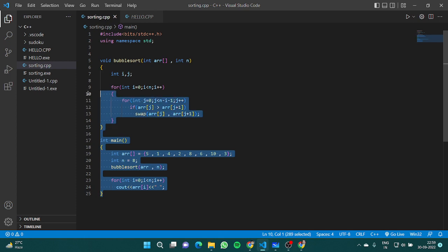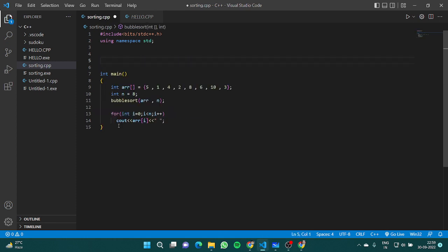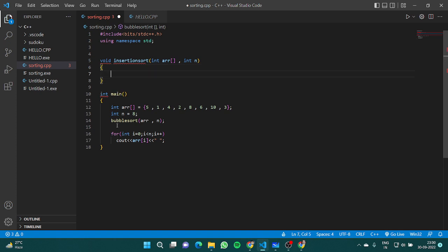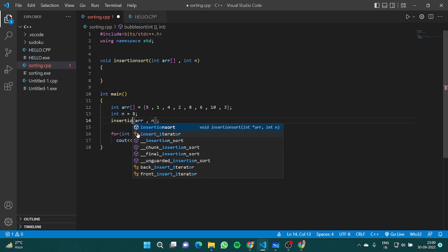We have the bubble sort we coded in the previous video. Let's write insertion sort. We have void insertion_sort with parameters int array and int n.